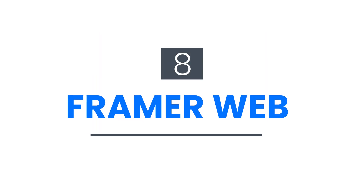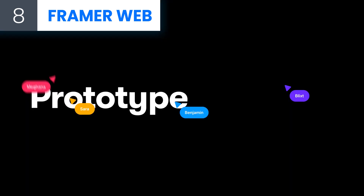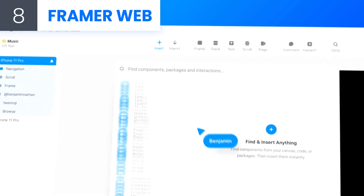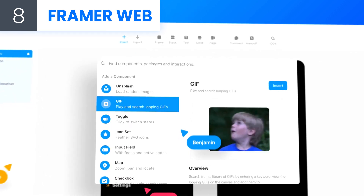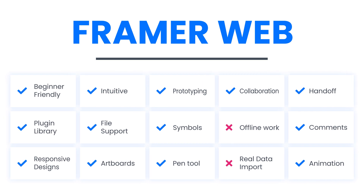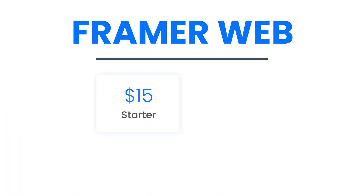At number 8: FramerWeb. FramerWeb is a great tool when you work on a project as a team. It's great for sharing, with a co-editing tool and great prototyping features. It works on Mac and web browsers. It strongly features great collaboration and simultaneous editing, and also has a great component library with useful assets. However, it doesn't support real data import, and if you want to work offline you'll need the Pro version. The price is $15 per month for the starter and $25 per month for the Pro, but there is a free option.